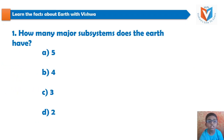This is the first question in facts about Earth. How many major subsystems does the Earth have? The options are: 5, 4, 3, or 2.